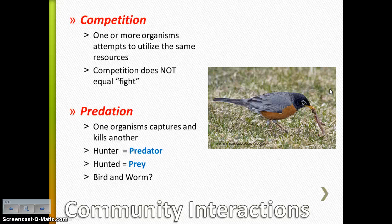Then you have predation, which is where one organism hunts and kills another. The hunter is the predator, and the hunted is the prey. So in the case of our bird and our worm here, the predator would be the bird and the prey would be the worm.